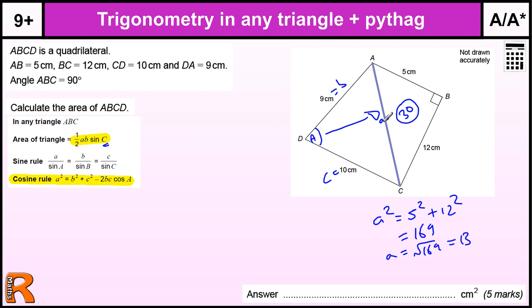But now we know what this value is because it's 13, we can put those into this formula for the cosine rule. So we've got 13 squared equals 9 squared plus 10 squared minus 2 times 9 times 10 times the cosine of A.